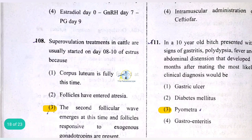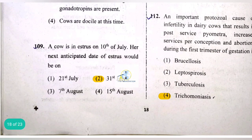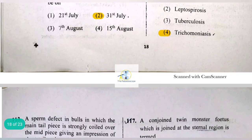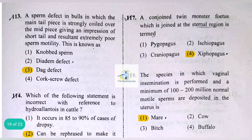In a 10-year-old bitch presenting with signs of gastritis, polydipsia, fever, and abdominal distension that developed two months after mating, the most likely clinical diagnosis would be pyometra. An important protozoal cause of infertility in dairy cows resulting in post-service pyometra, increased services per conception, and abortions during the first trimester is trichomoniasis.